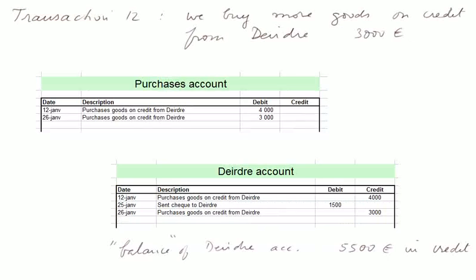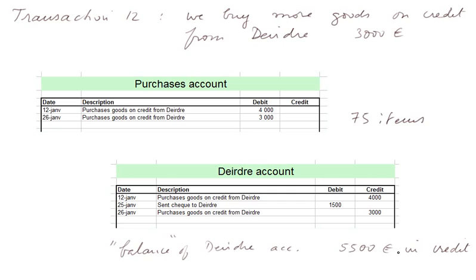Transaction 12: we buy more goods on credit from Deirdre for 3,000 euros. The purchases account is debited 3,000 euros. These items cost 40 euros apiece, so 3,000 divided by 40 means 75 items purchased from Deirdre. Deirdre's account is credited a further 3,000 euros, giving Deirdre's account a balance of 5,500 euros in credit (7,000 minus 1,500).